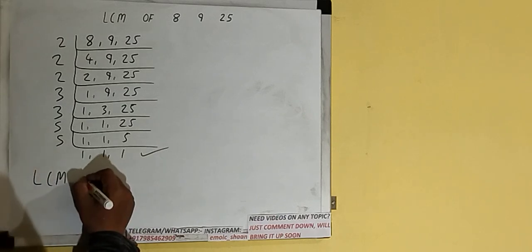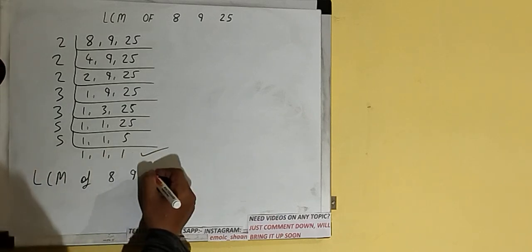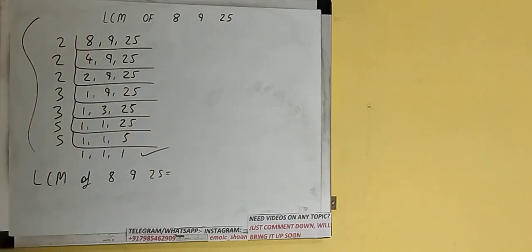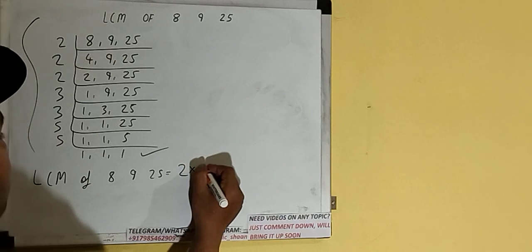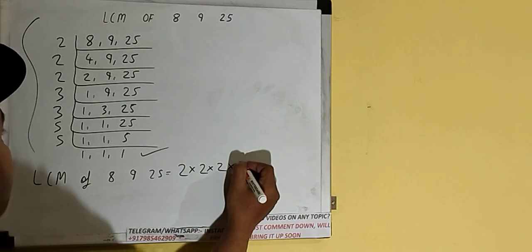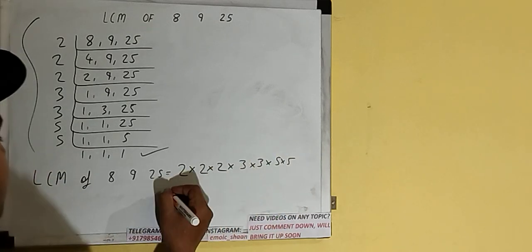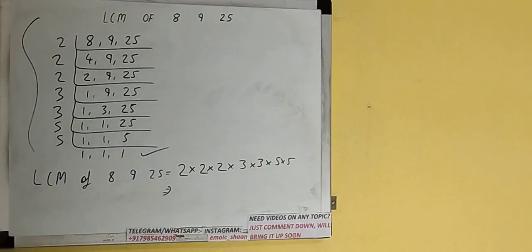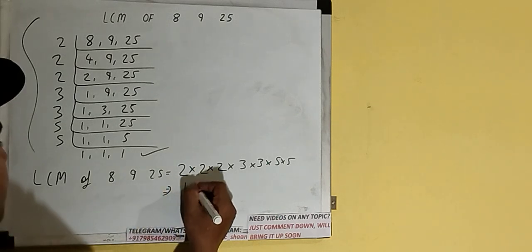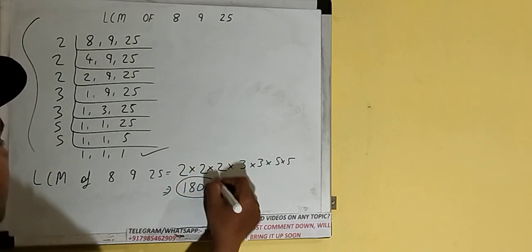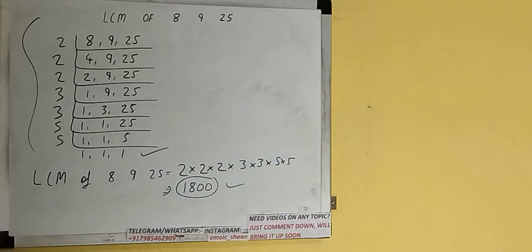Now we do one last thing: the LCM of 8, 9, and 25 is found by multiplying whatever we have on the left-hand side — that is 2, 2, 2, 3, 3, and 5. So the answer would be 1800. The LCM of 8, 9, and 25 is 1800.